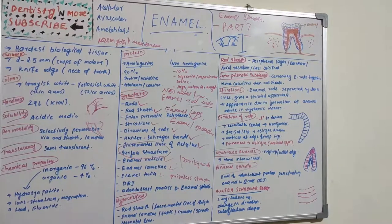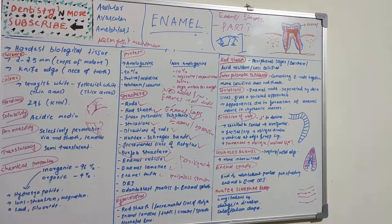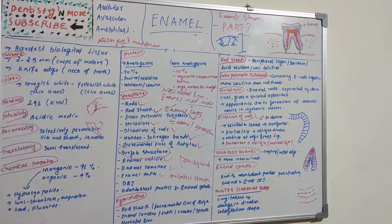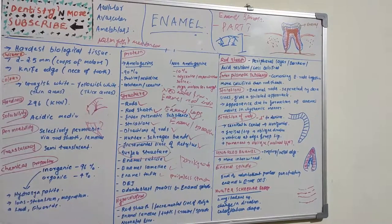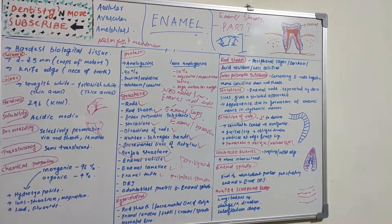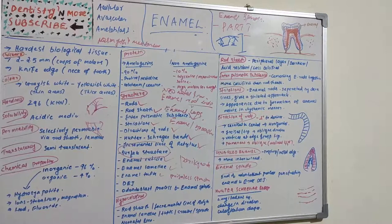This video covers surface structures of enamel such as Hunter-Schreger bands, incremental lines of Retzius, perikymata, prismless enamel, nasmyth membrane (enamel cuticle), enamel lamella, enamel tufts, dentino-enamel junction, and enamel spindles and enamel rod ends — all structures seen on the enamel surface.